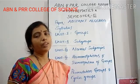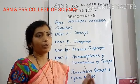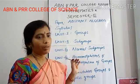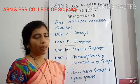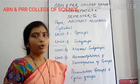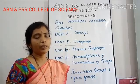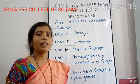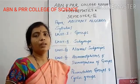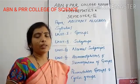Unit 2 is about subgroups. Unit 3 is normal subgroups. Unit 4, homomorphisms and isomorphisms. Finally, unit 5 is permutation groups and cyclic groups.